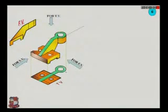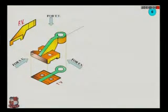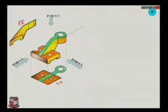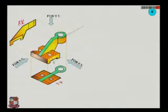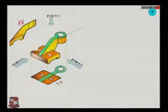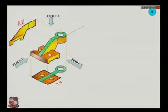Now considering the side view, we will observe initially the base — that is this rectangle. Then, these two holes are not observed; they are invisible in the side view. Similarly, this slot in the base is invisible in the side view. The rib, in the pictorial view, when we see from the side, will be observed as a rectangle.